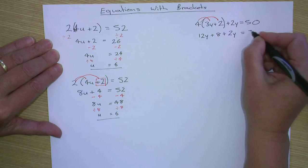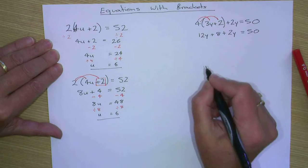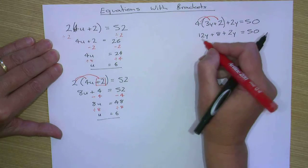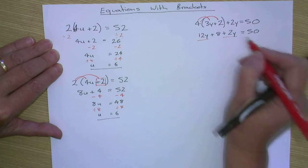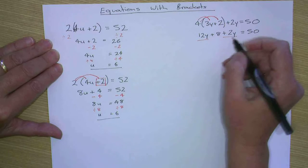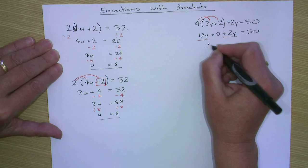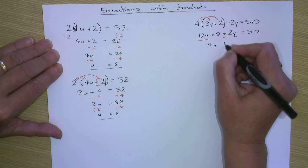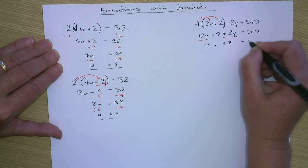It was fifty. So once we get to this stage, you can see that we have like terms. So I've got plus twelve y plus two y. So that gives me fourteen y plus eight equals fifty.